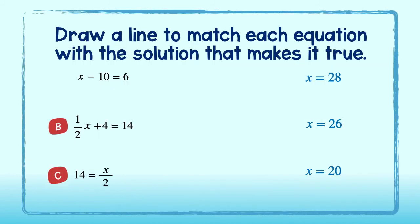Okay, now it's your turn. Draw a line to match each equation with the solution that makes it true. The solution of part A is 26. If we replace x with 26, we can see that 26 minus 10 is equal to 6. Our statement is true and 26 is the solution.